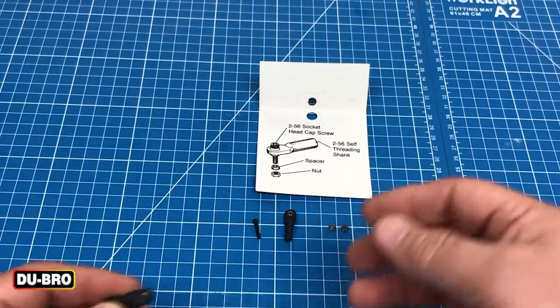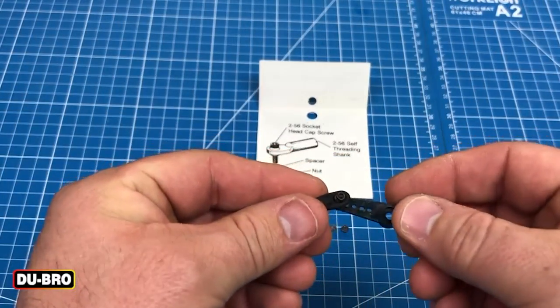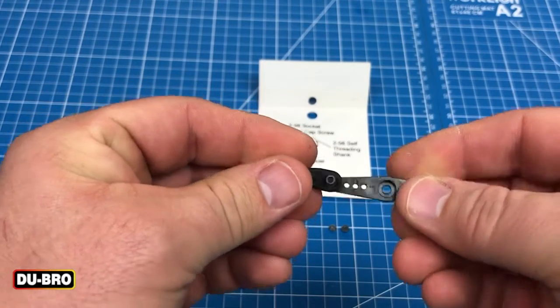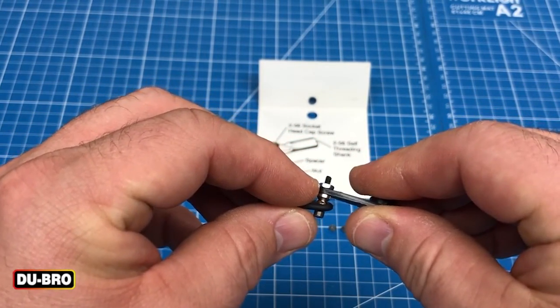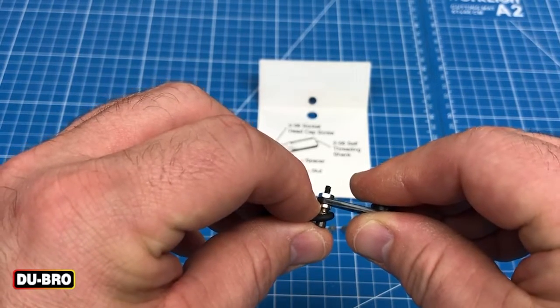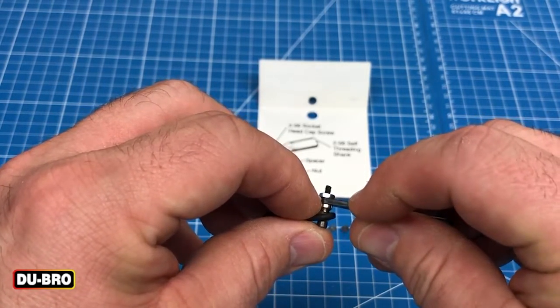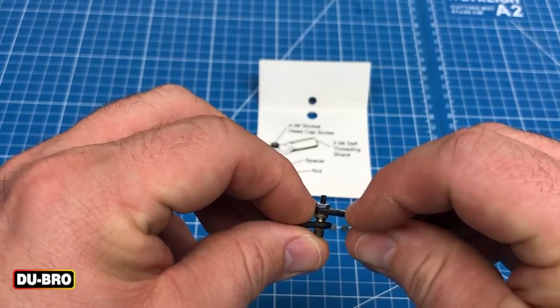Assembly per the diagram will result in something that looks like this. The head cap screw goes through the swivel ball link itself with the spacer after that, then through your control horn and is secured with the nut.